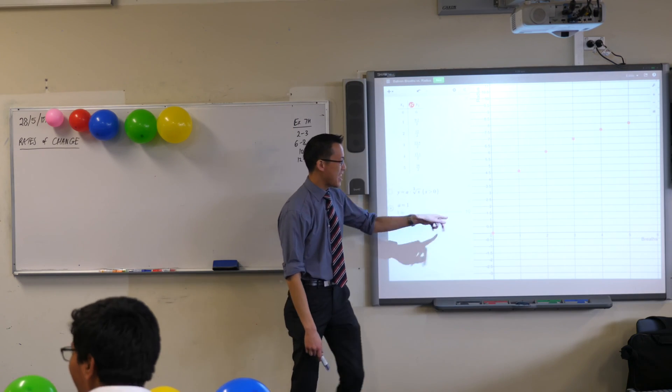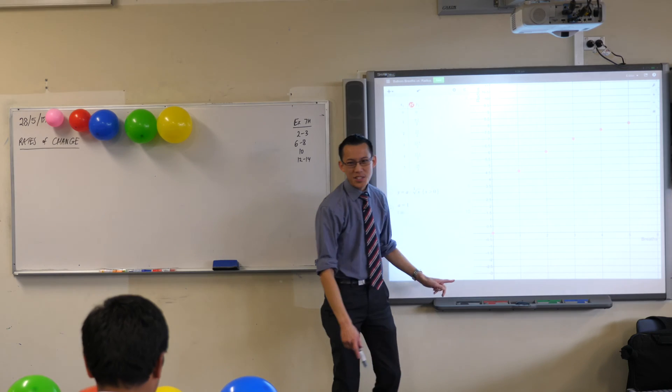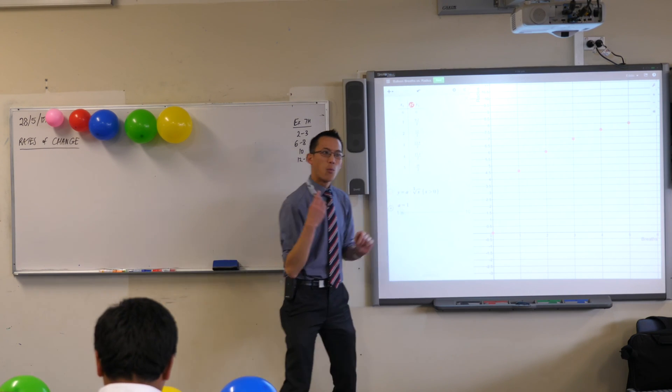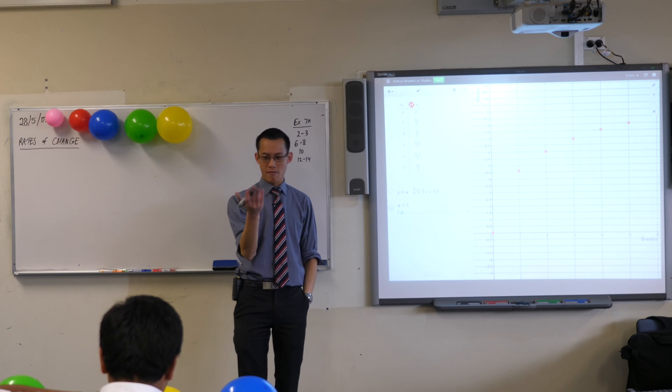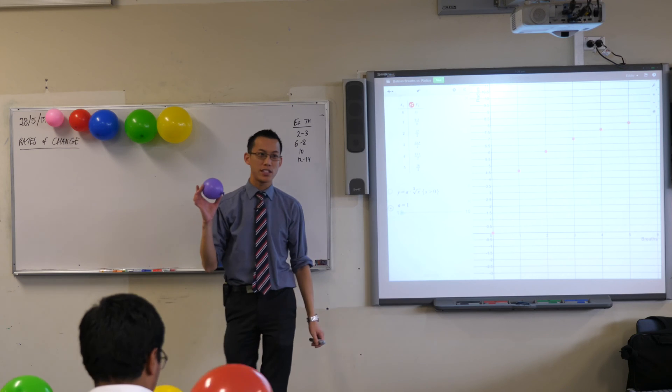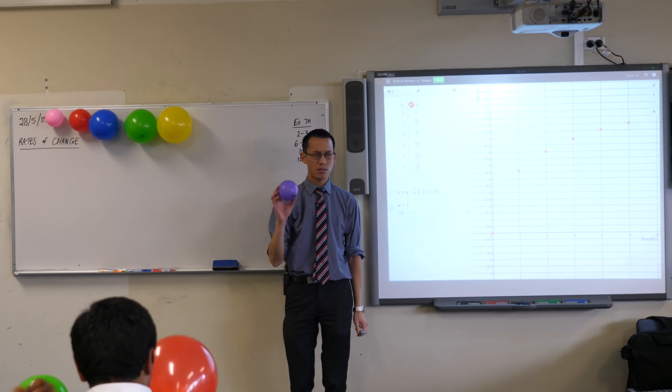You can see that as volume increases, radius also increases, but not at the same rate. Do you notice that? What do you expect to be the relationship between radius and volume? Think about this. This is roughly spherical, yeah? So what's the relationship?